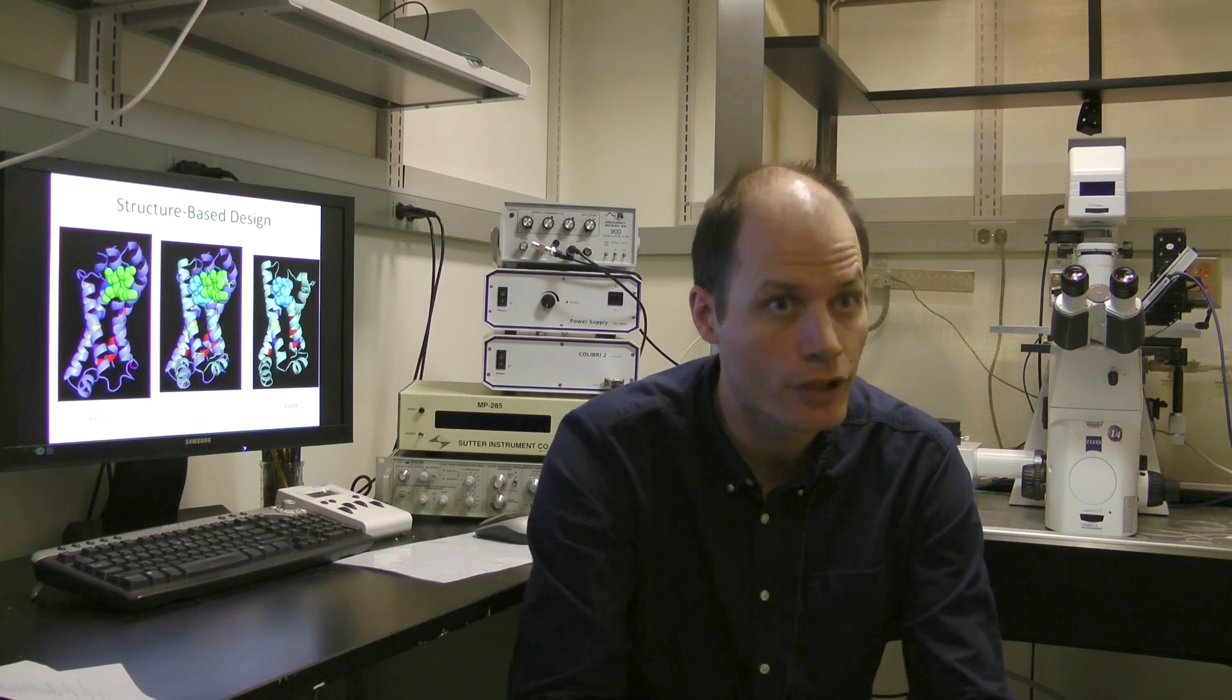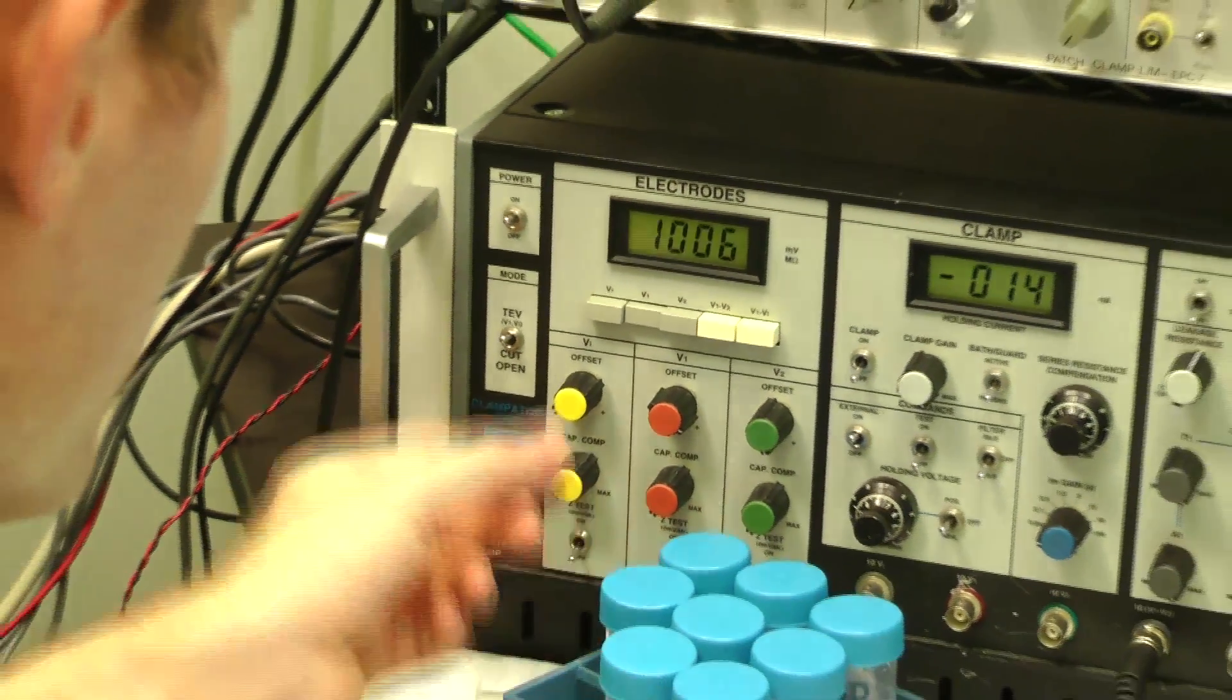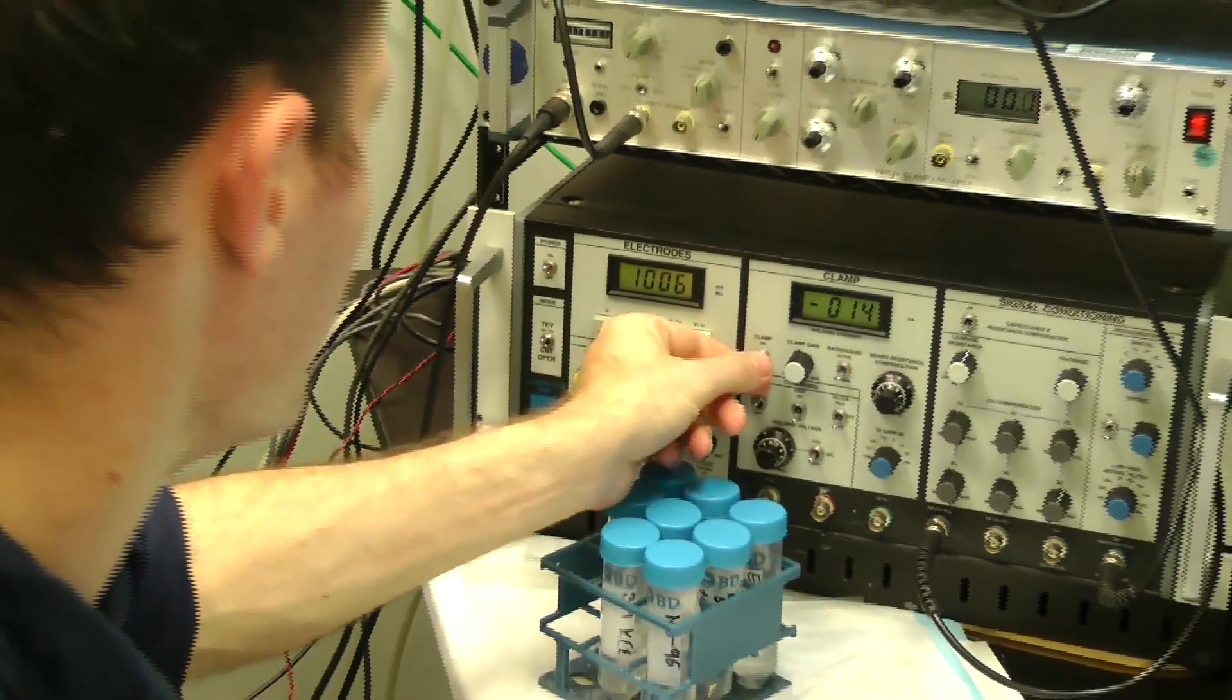So one difficulty when we're trying to understand why a toxin activates one cell and not another is cells are very complicated. They contain lots of different molecules and their state varies depending on what's going on.